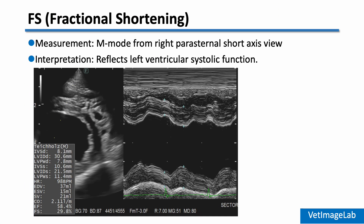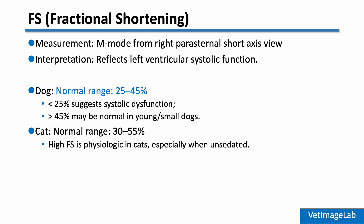Fractional shortening, or FS, is the parameter used to assess left ventricular systolic function. It's measured using M-mode from the right parasternal short axis view, usually at the level of the papillary muscles. In dogs, the normal FS range is about 25 to 45 percent. If FS drops below 25 percent, that suggests systolic dysfunction. On the other hand, values over 45 percent may still be normal, especially in small breeds or young dogs.